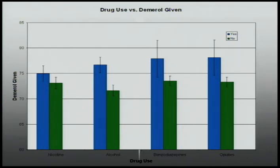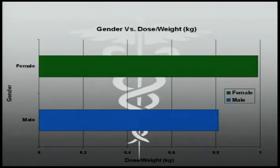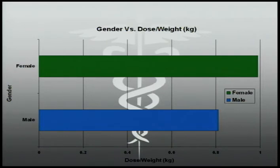Other observations made were that alcohol users near the date of procedure required more medication, along with those that take opiates or benzodiazepines, with changes greater than 5%. Another conclusion drawn from the data included that both males and females average 74 milligrams of Demerol, but when weight was taken out of the interpretation, it was noticed that females required a higher dose of Demerol for each kilogram of body weight. For example, given an 80 kilogram male and an 80 kilogram female, the female would require more medicine.